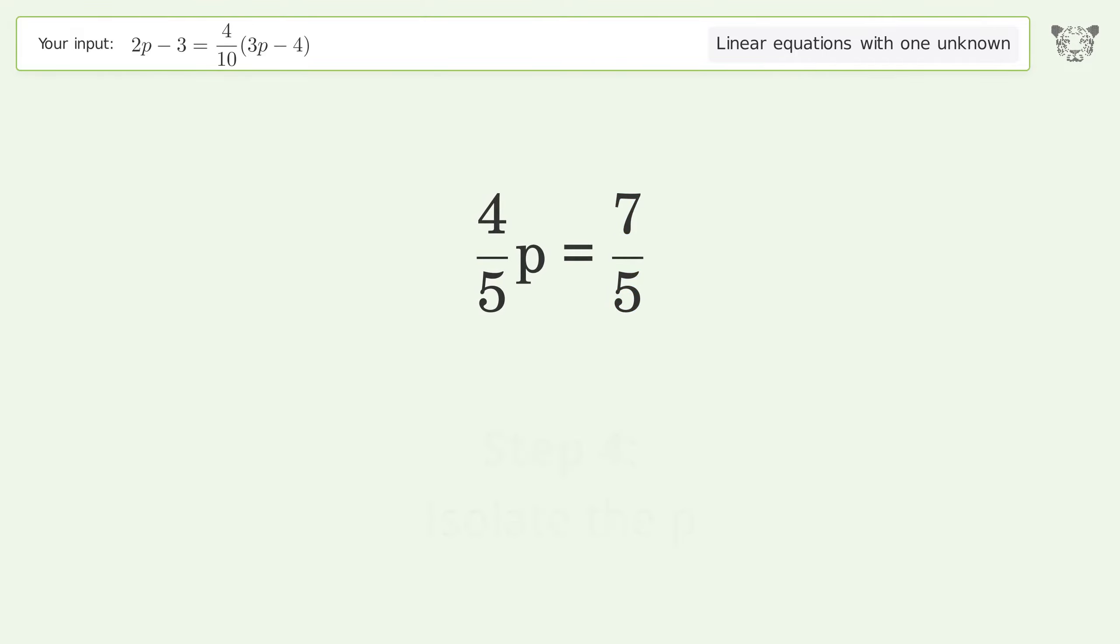Isolate the p. Multiply both sides by the inverse fraction 5 over 4.